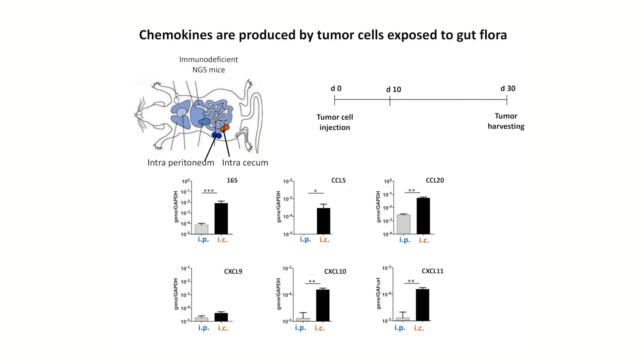We then investigated the cellular source of the identified chemokines within the colorectal cancer microenvironment. We found that most of these chemokines are produced by tumor cells upon exposure to commensal bacteria of the gut flora.